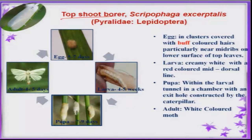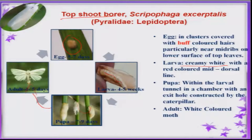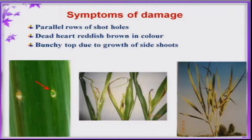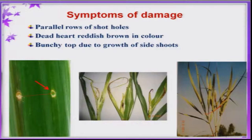The top shoot borer is also one of the important pests throughout the country, more in North India than the South. Buff colored eggs are laid on the leaf, larvae are creamy white in color with a red color midrib, and pupation takes place inside the cane. White adults emerge after seven to nine days. Since it enters through the midrib and affects the growing shoots, series of holes are present on the leaves, producing a bungee appearance. This bungee shoot appearance is a common phenomenon in top shoot borer.